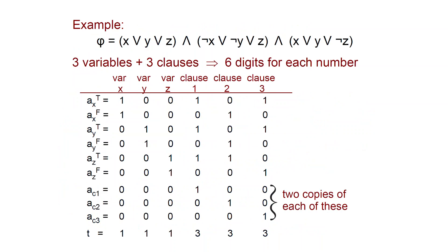Let's see an example. Here is a formula with three variables and three clauses, so our numbers will have six digits. The first three digits correspond to variables x, y, z. The other three digits correspond to clauses one, two, three.